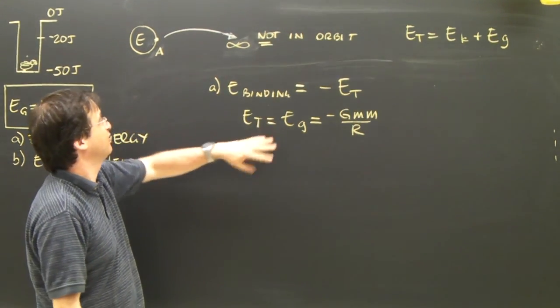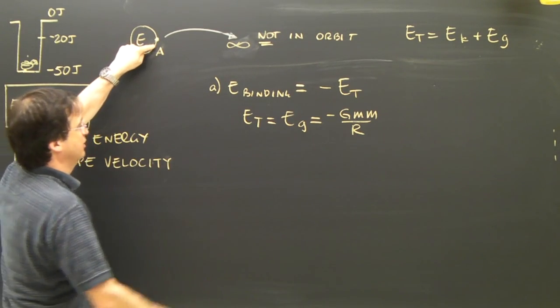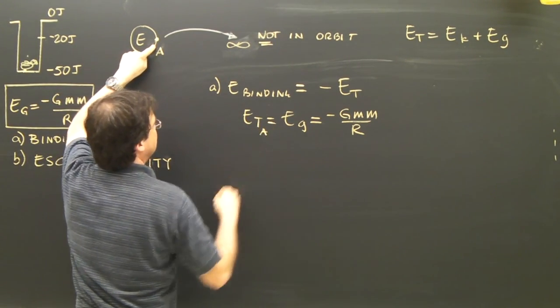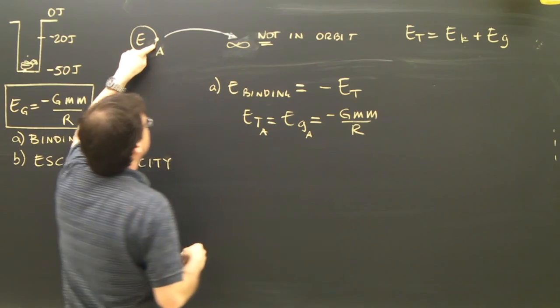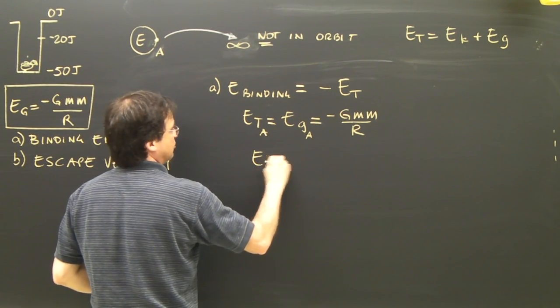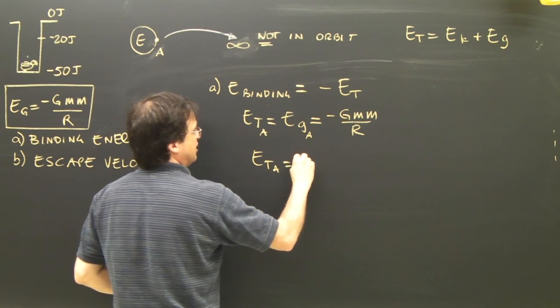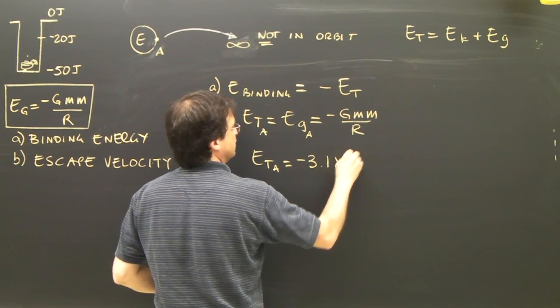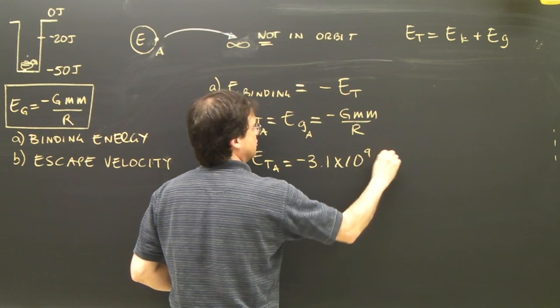And in the last part, we calculated that. At this point, the total at a is the gravitational at a. And we calculated that and we got that the gravitational, which is the total, is negative 3.1 times 10 to the 9 joules.